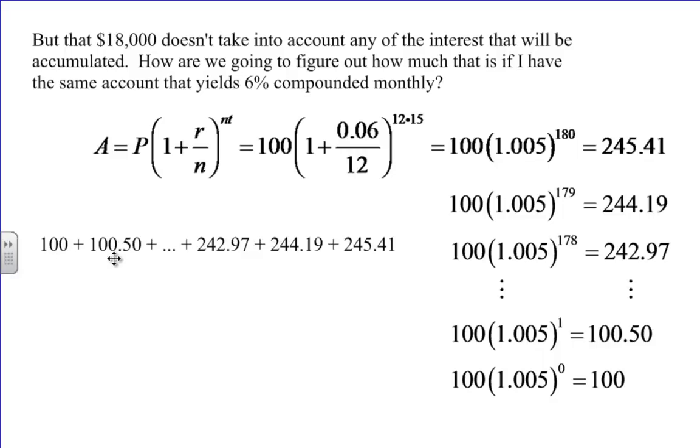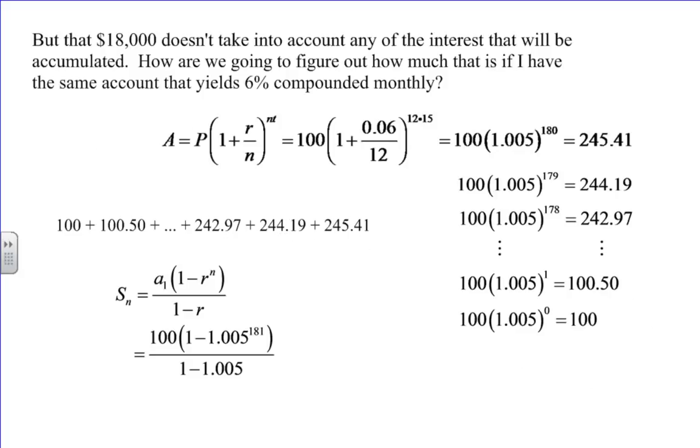I can add those numbers up: $100, $100.50, all the way up to $242.97, $244.19, $245.41. Because I started here with the first payment being zero and the last payment being $180, I've actually made 181 payments in this geometric sequence. And when I add that all up, that gives me $29,327.28. That's much better, but we still have some work to do.